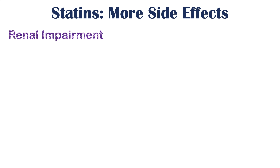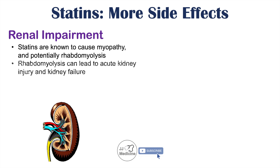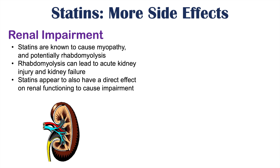One side effect is renal impairment. Statins are known to cause myopathy and potentially rhabdomyolysis, and rhabdomyolysis due to loss of myoglobin can cause kidney injury, leading to acute kidney injury and kidney failure. On top of that, statins appear to also have a direct impact on renal functioning to cause impairment — not all patients will have this, but some will experience direct effects on their kidneys from statins.